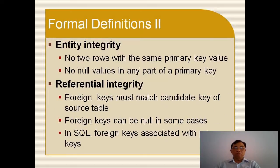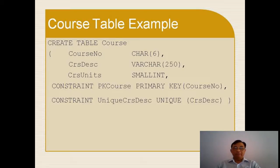Now I go to the formal definition of entity integrity: no two rows with the same primary key value, and no null value in any part of a primary key. Referential integrity means foreign keys must match the candidate key of another table. Foreign keys can be null in some cases. This is an example of a Course table — I use a CREATE TABLE statement. It has course number, course description, course units, and two constraints: the primary key based on course number, and a unique constraint on course description.